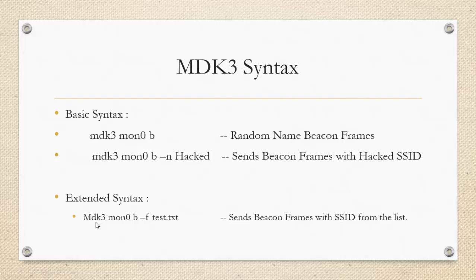In the third example, instead of specifying a particular SSID, we have a list of 10-12 SSIDs in the test.txt file, and we are telling MDK3 to send beacon frames with the SSID names present in that text file. For example, if you have 100 names inside test.txt, within 2-3 minutes MDK3 will broadcast beacon frames for all 100 names, and you will be able to find 100 new Wi-Fi networks pop up in your area.